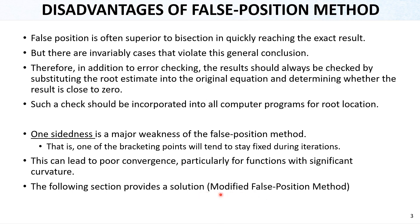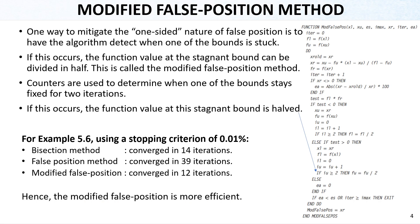There is also a modified false position method which can overcome this problem. The modified false position method uses the idea of reducing one-sided behavior by changing the stagnant lower or upper bound value. If a bound stays the same during iterations — detected as one-sided — the function value at that stagnant bound can be divided in half. That is why it is called the modified false position.